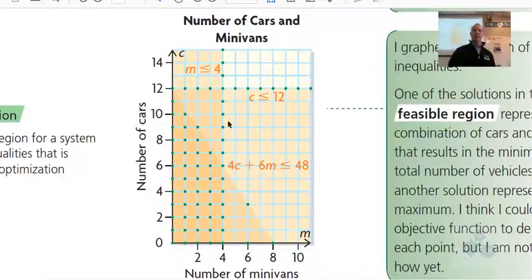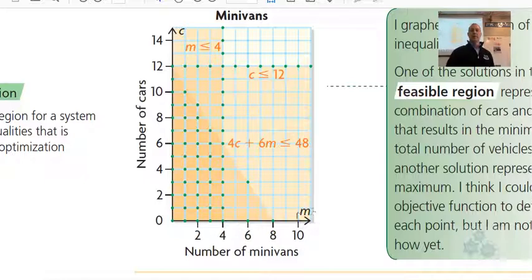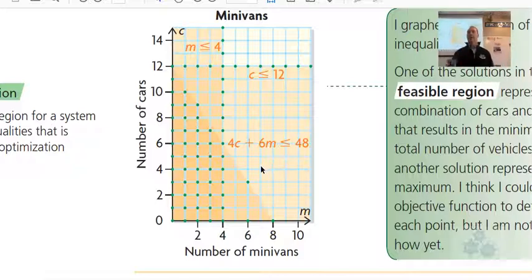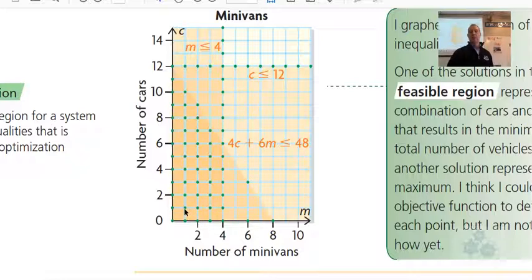The graph is titled 'Numbers of Cars and Minivans,' with cars on one axis and minivans on the other. We graph our inequalities: M ≤ 4 gives the line M = 4 with shading below; C ≤ 12 gives a horizontal line with shading underneath. The constraint 4C + 6M ≥ 48 gives an oblique slanted line — you can use a table of values or isolate for C into slope-intercept form. Once all regions overlap, you identify the feasible region, and the corner points represent possible solutions.